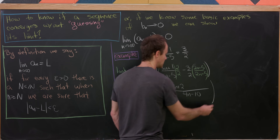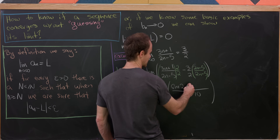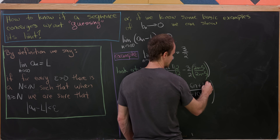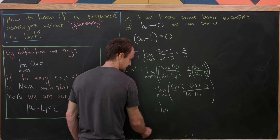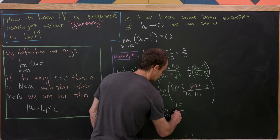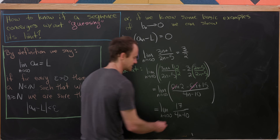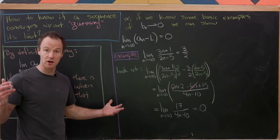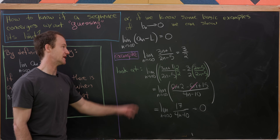Multiplying the negative three through the numerator of the second term gives −6n + 15. Notice the 6n terms cancel, leaving the limit as n goes to infinity of 17/(4n − 10). This fits a basic example of a sequence tending towards zero: the numerator is a constant while the denominator grows larger and larger. Thus the whole thing goes to zero, and we've shown the limit is 3/2.